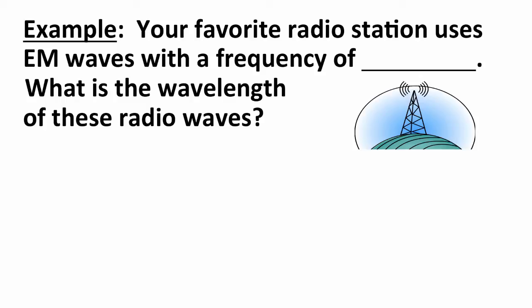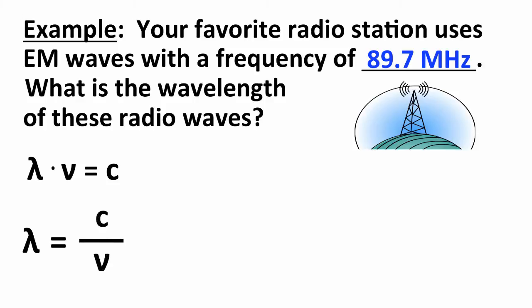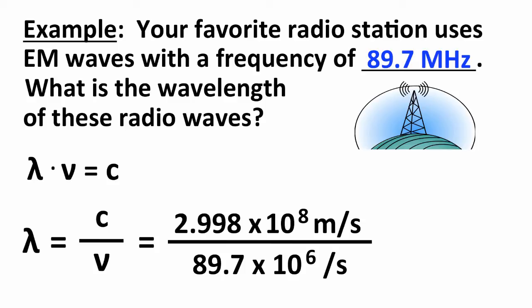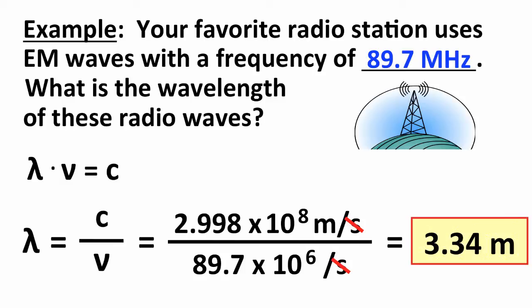Second example: a public radio station broadcasts at 89.7 megahertz — what is the wavelength of these radio waves? Solving for wavelength: lambda equals C over nu. Speed of light is 2.998 times 10 to the eighth meters per second. 89.7 megahertz equals 89.7 times 10 to the sixth per second. The units of per second cancel, giving a wavelength of 3.34 meters.